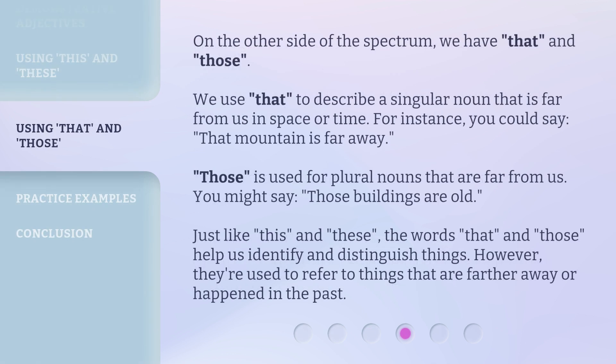On the other side of the spectrum, we have 'that' and 'those'. We use 'that' to describe a singular noun that is far from us in space or time. For instance, you could say, 'that mountain is far away.' 'Those' is used for plural nouns that are far from us. You might say, 'those buildings are old.' Just like 'this' and 'these', the words 'that' and 'those' help us identify and distinguish things. However, they're used to refer to things that are farther away or happened in the past.